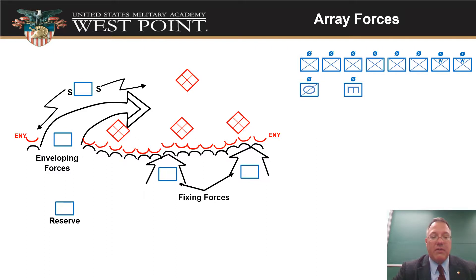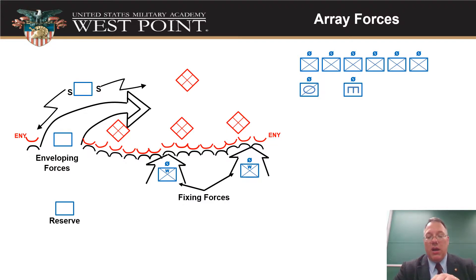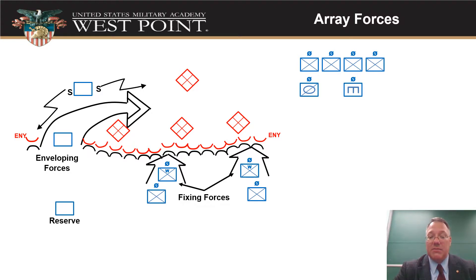Looking at the doctrine template, we need a fixing force. I take my heavy weapons teams and put one on each side of the fixing element, spreading heavy weapons across the entire front. Then looking at the enemy — if there's a whole enemy rifle team across from them — I may need to back them up with rifle teams to augment and make sure my fixing forces have enough combat power.